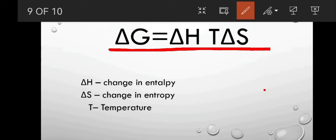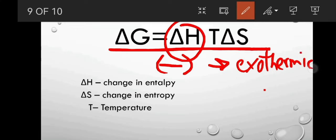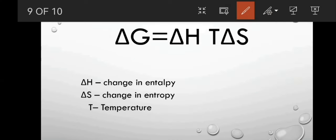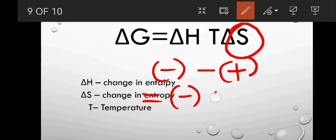Using this equation, we can see how a spontaneous process can be either enthalpically or entropically favorable, or both. For example, if delta H is negative, that means it is exothermic and energetically favorable. And if delta S is positive, which means there is an increase in entropy, that is also favorable. A negative minus a positive will always be negative, or spontaneous.